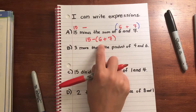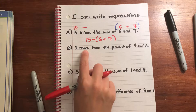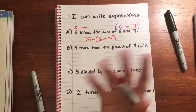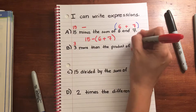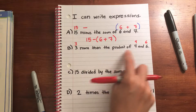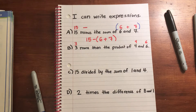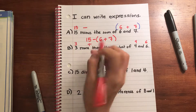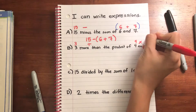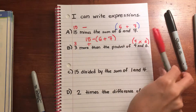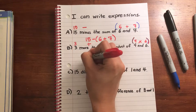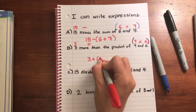Looking at the next one: 'three more than the product of 4 and 6.' Again, associate those math words with operations. '3' I can rewrite as 3; '4 and 6' — get those easy ones out of the way. 'More than' means addition. 'Product' is the answer to a multiplication problem. So I'm going to put parentheses around 4 and 6 because I have to find that product first: 3 + (4 × 6).